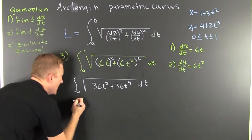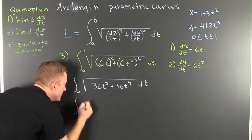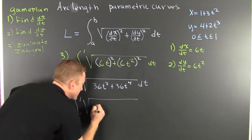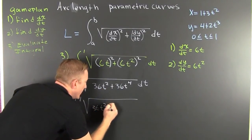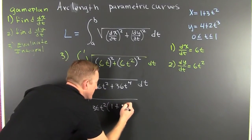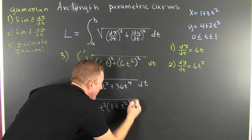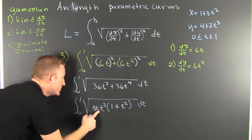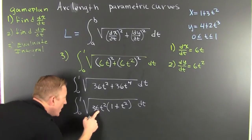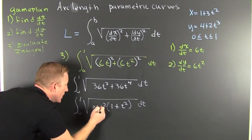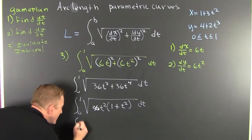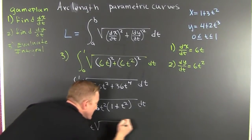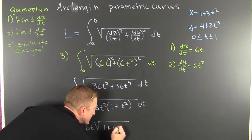This goes further. We look at the integral from 0 to 1 of the square root of 36t squared times the quantity 1 plus t squared, dt. We can pull the square root of 36t squared out front — that gives us 6t — so now we're looking at the integral from 0 to 1 of 6t times the square root of 1 plus t squared.